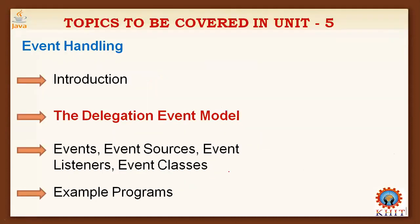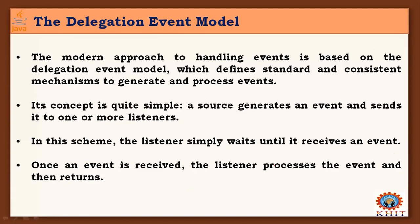Next is the delegation event model. In previous versions of Java — 1.0 and 1.5 — events could be handled in two ways: an older version and a newer version. But nowadays we use the modern approach to handle events based on the delegation event model. This model defines standard and consistent mechanisms to generate and process events in our programs.